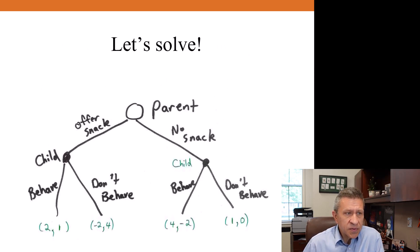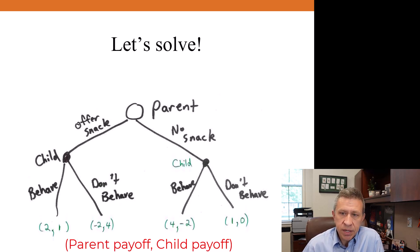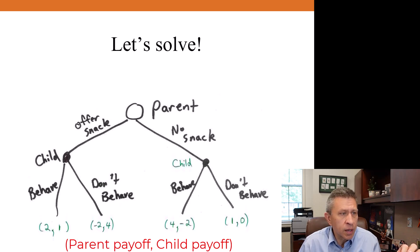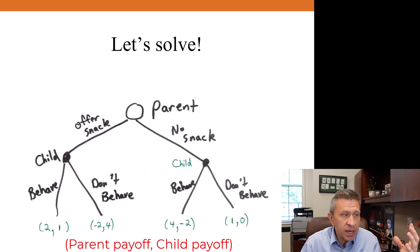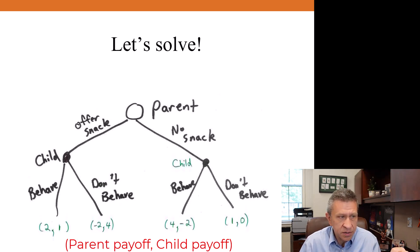In the previous video we showed this particular game — a parent and a child. Simple game, with my lovely handwriting on the screen. The child could behave or not behave. The parent could offer a snack or not offer a snack. The two proper sub-games are the two cases where the child makes an action — after the parent offers a snack, or after the parent doesn't offer a snack. Each of these are sub-games.